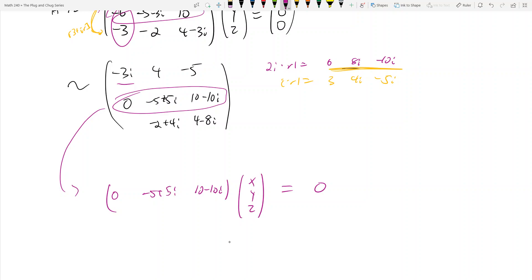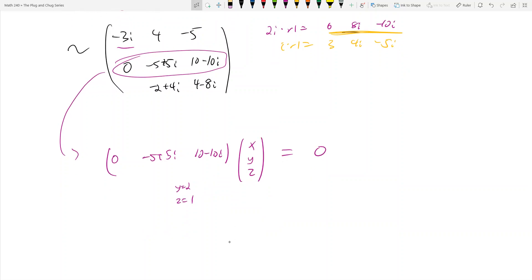From eyeballing, it looks like if I make y equal to 2, then I get -10+10i, which is exactly the opposite of this term, which means I can just make z equal to 1. If I make y equals 2 and z equals 1 and multiply this out, you get exactly 0, which is good. I didn't have to worry about what x was because this first entry was zero.